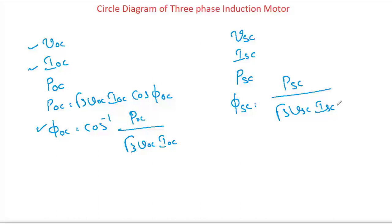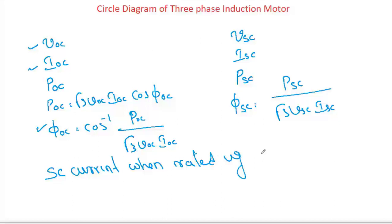Along with that, some other data is also required — the short circuit current when rated voltage is applied. During a block rotor test, we apply not more than 20% of the rated voltage. Theoretically, we need to determine what the block rotor current would be when we apply the rated voltage. Additionally, we should know the values of stator resistance and rotor resistance, which can be obtained by conducting the DC test. With this data, we can go ahead for drawing the circle diagram.